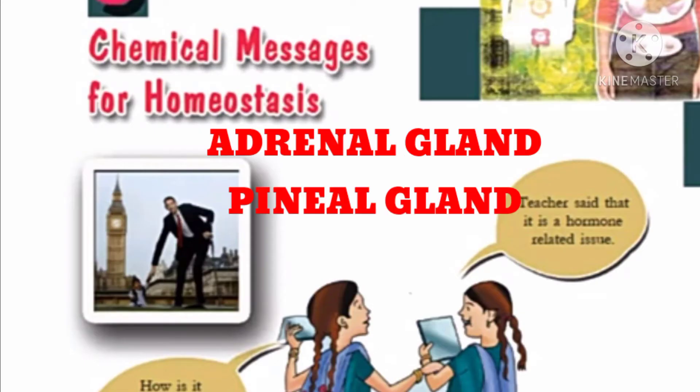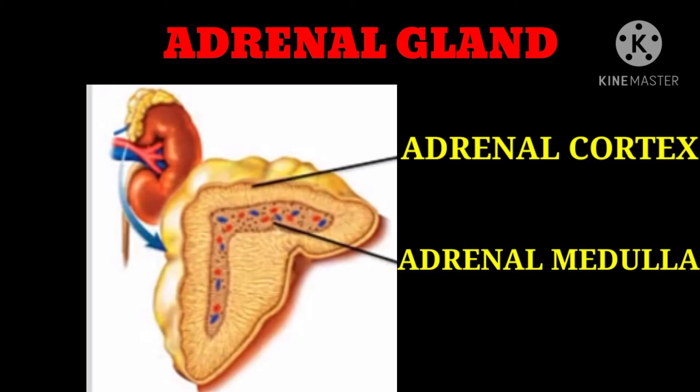Hello students, welcome back to my classroom. Today we discuss another endocrine gland — the adrenal gland. Look at the picture: they are a pair of yellowish, flat, pyramid-like glands which lay over the upper end of the kidney.